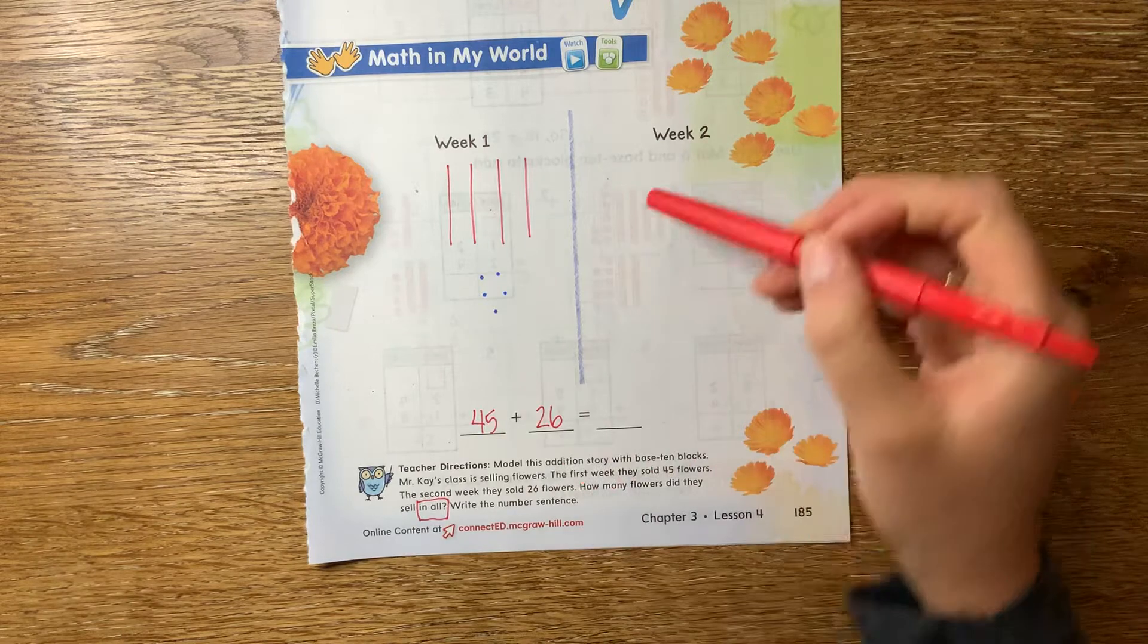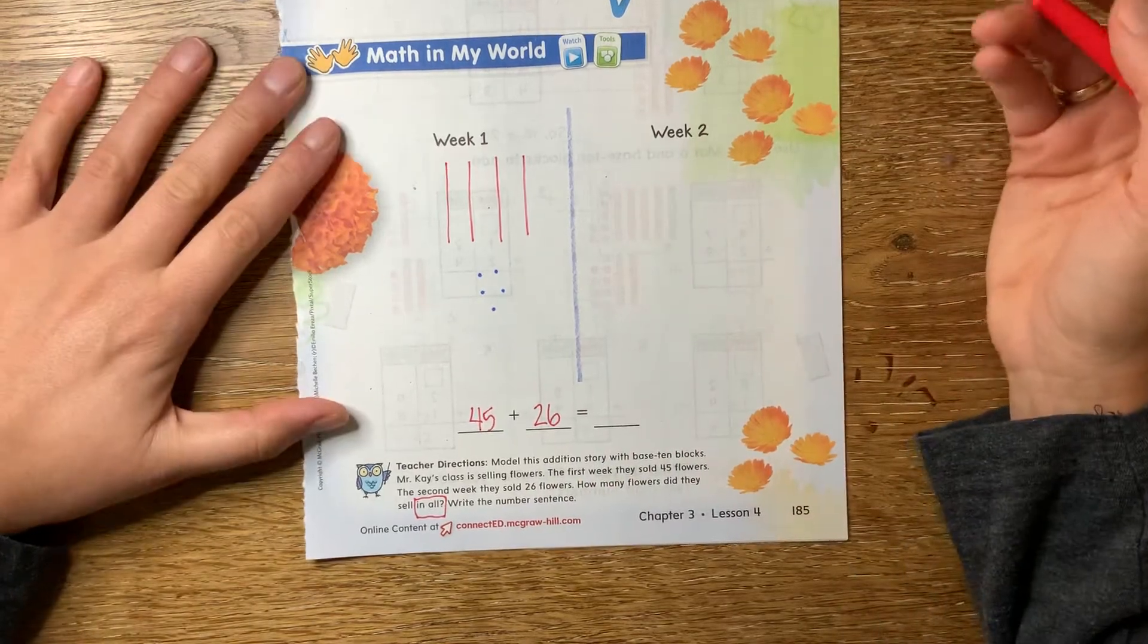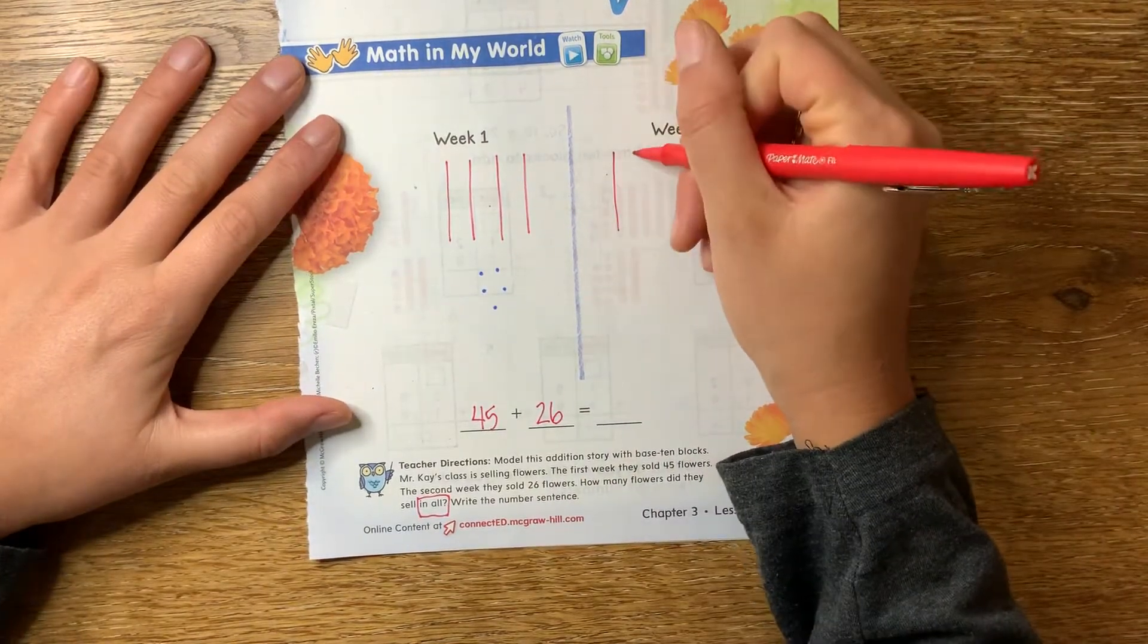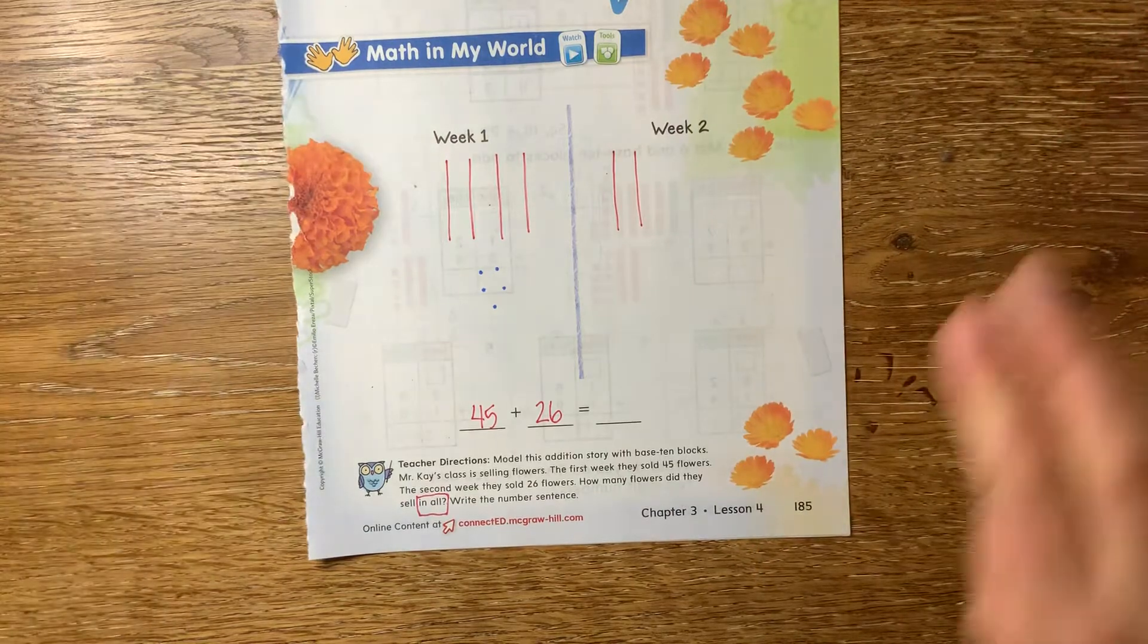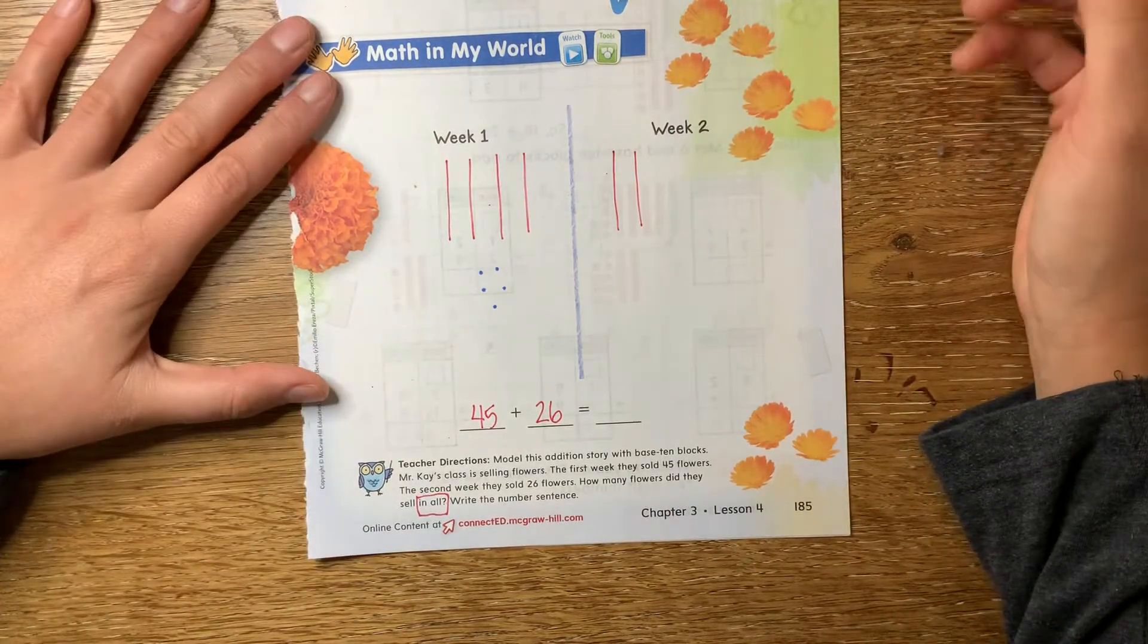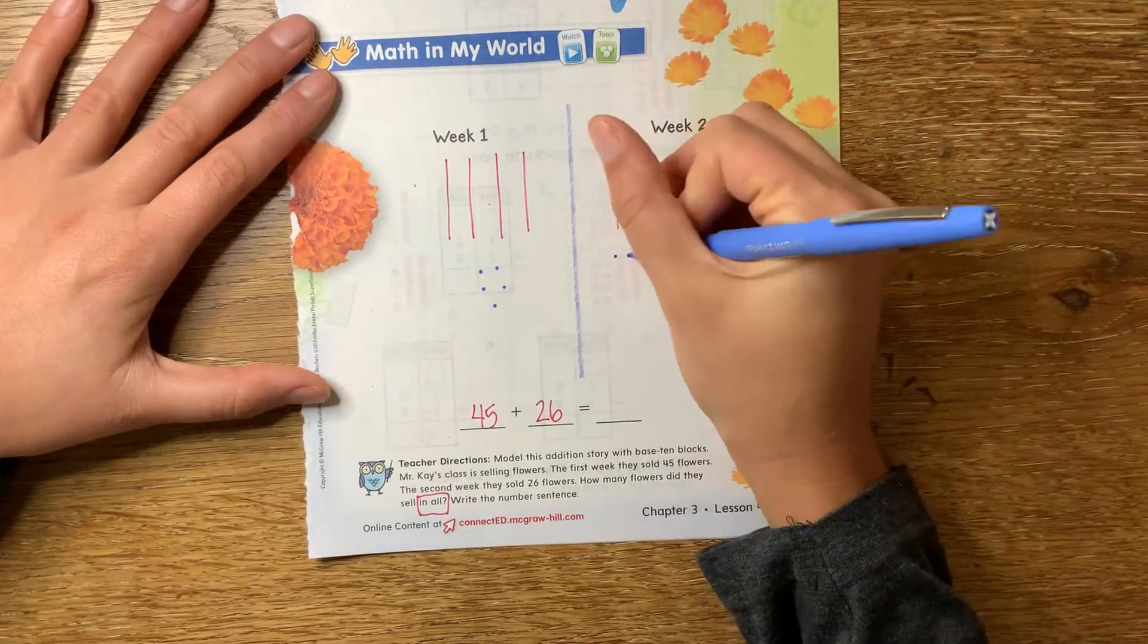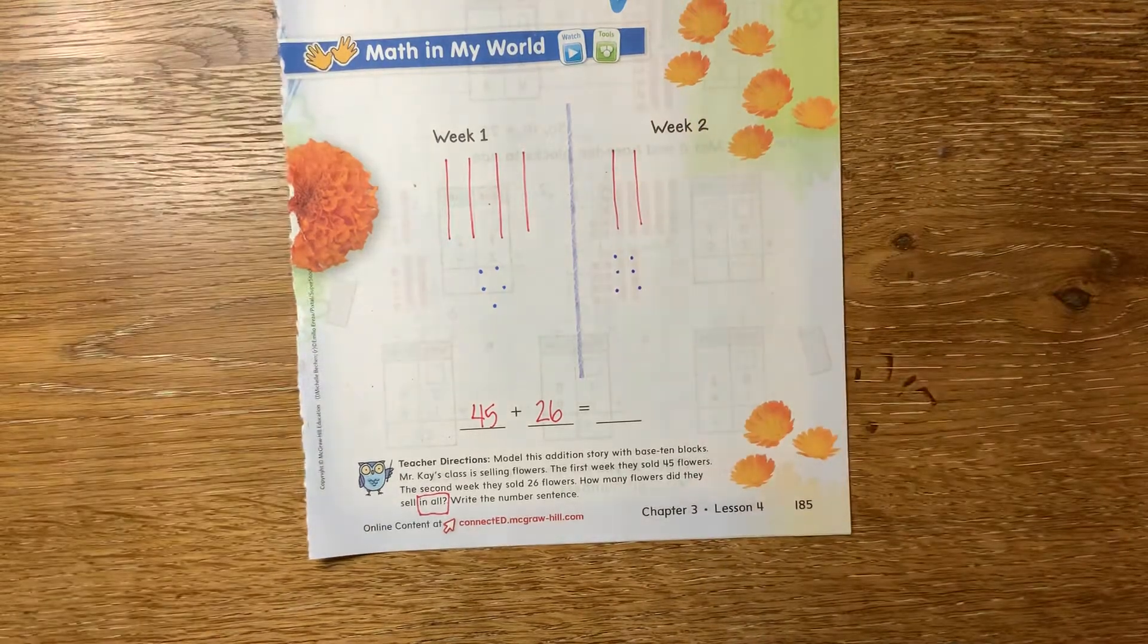All right, so now how many tens do I draw for 26? I draw two tens. One, two. And how many ones do I draw for 26? Six. One, two, three, four, five, six.